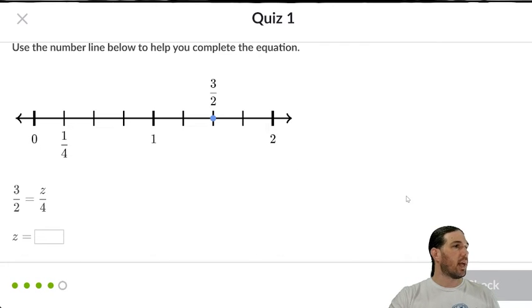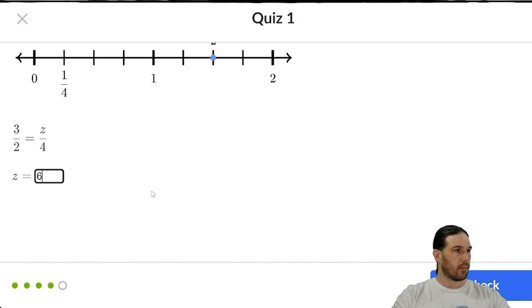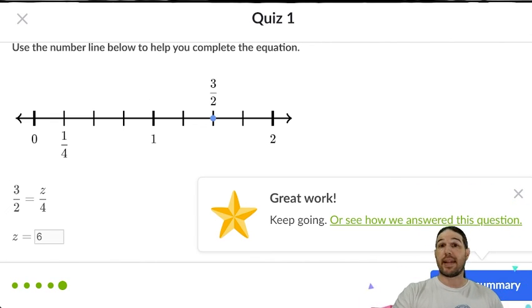Use the number line to help you complete the equation. 3 over 2 equals blank over 4. 1, 2, 3, 4, 5, 6 over 4. And that's Quiz one.